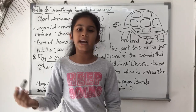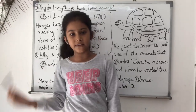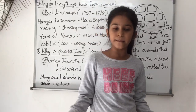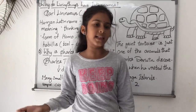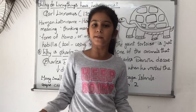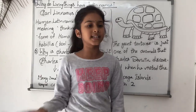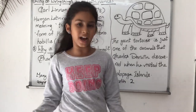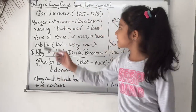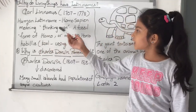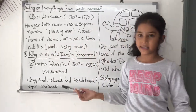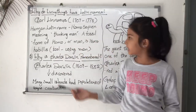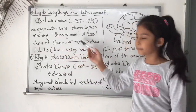The specific name can tell about the living thing, describe its characteristics, and also tell the name of the man who discovered it. Now here is a fact: the human Latin name is Homo sapiens, meaning 'thinking man'.